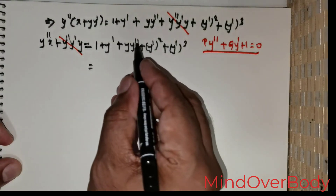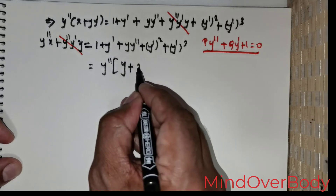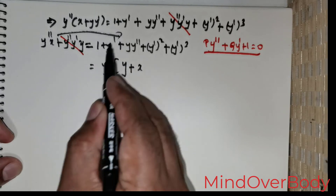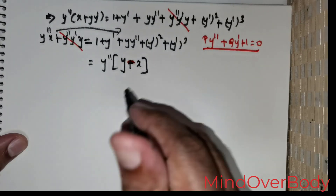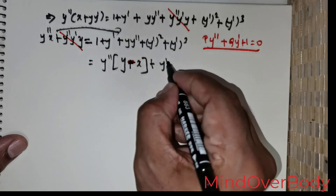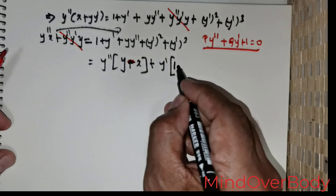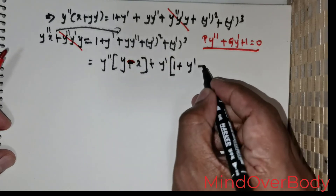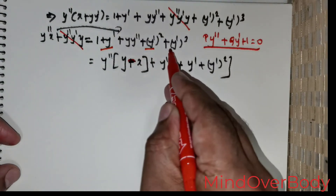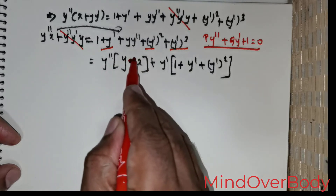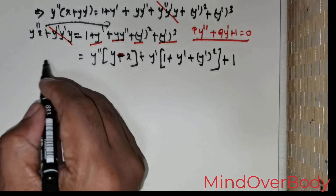Taking y'' out: y''·(y − x) + y'·(1 + y' + (y')²) + 1 = 0. Therefore this is of the form p·y'' + q·y' + 1 = 0, where p = y − x and q = 1 + y' + (y')².